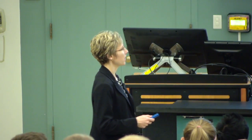All together that sets up the cross product answer in vector notation. The resulting vector has a particular magnitude: the magnitude of a cross b equals the magnitude of a, times the magnitude of b, times sine theta.